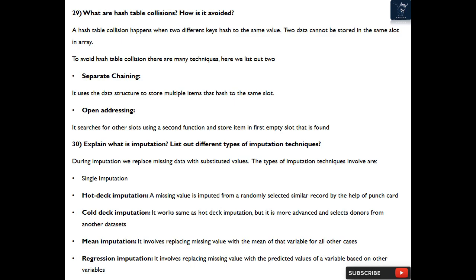Question 30: Explain what is imputation? List out different types of imputation techniques. During imputation, we replace missing data with substituted values. The types of imputation techniques involve are: Single imputation - Hot deck imputation: a missing value is imputed from a randomly selected similar record by the help of punch card. Cold deck imputation: it works same as hot deck imputation but it is more advanced and selects donors from another data sets. Mean imputation: it involves replacing missing value with the mean of that variable for all other cases.